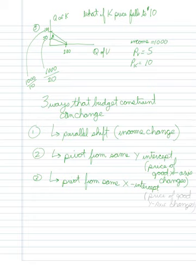Number three: I can pivot from the same x-intercept, which is what would happen if the price of the good on the y-axis changes. These shifts in movement are going to be useful for us in video number six next.